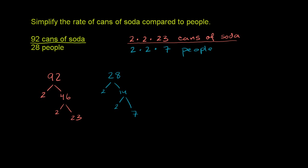So if you divide the top number by 4, or if you divide it by 2 times 2, it will cancel out right over there. And then if you do the bottom number divided by 4, or 2 times 2, it will cancel out with that 2 times 2. And we are left with 23 cans of soda for every 7 people.